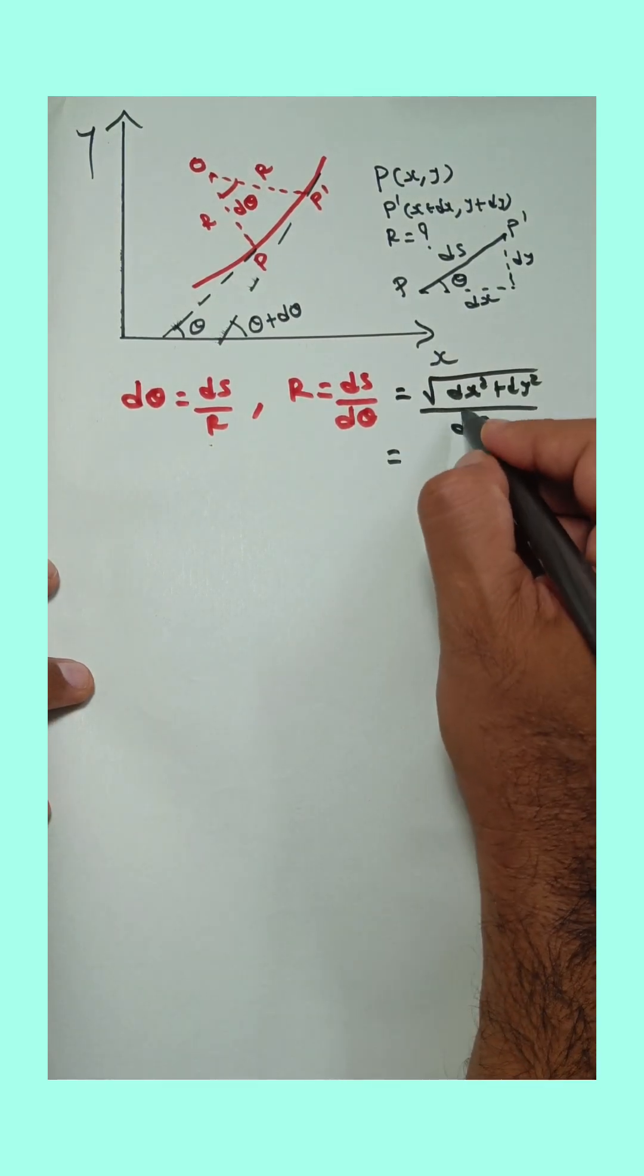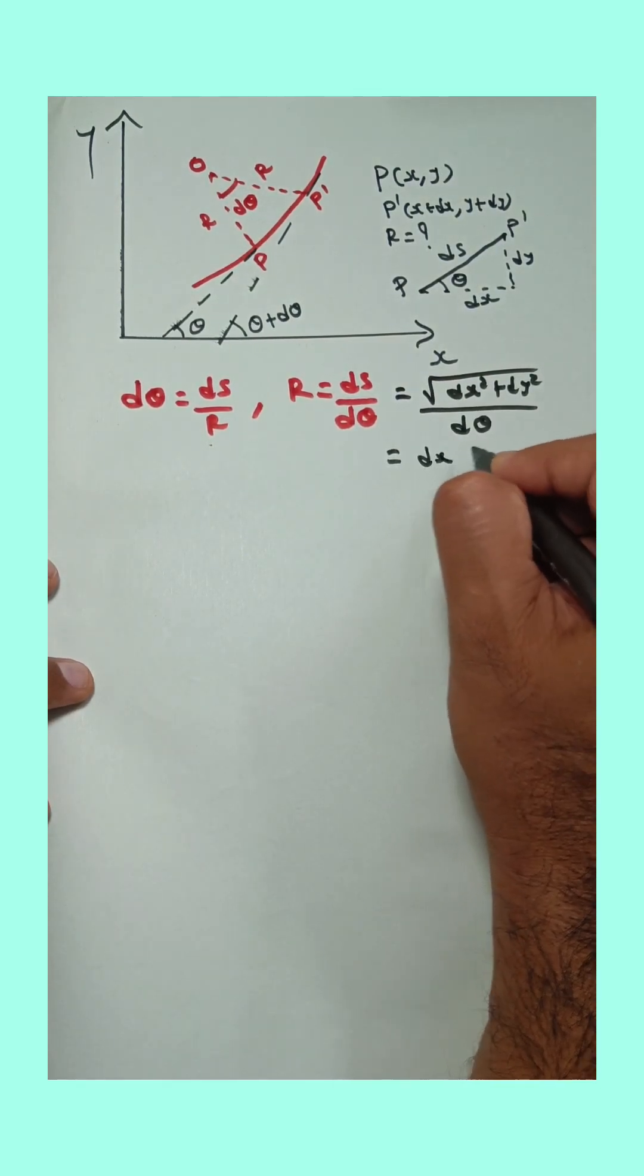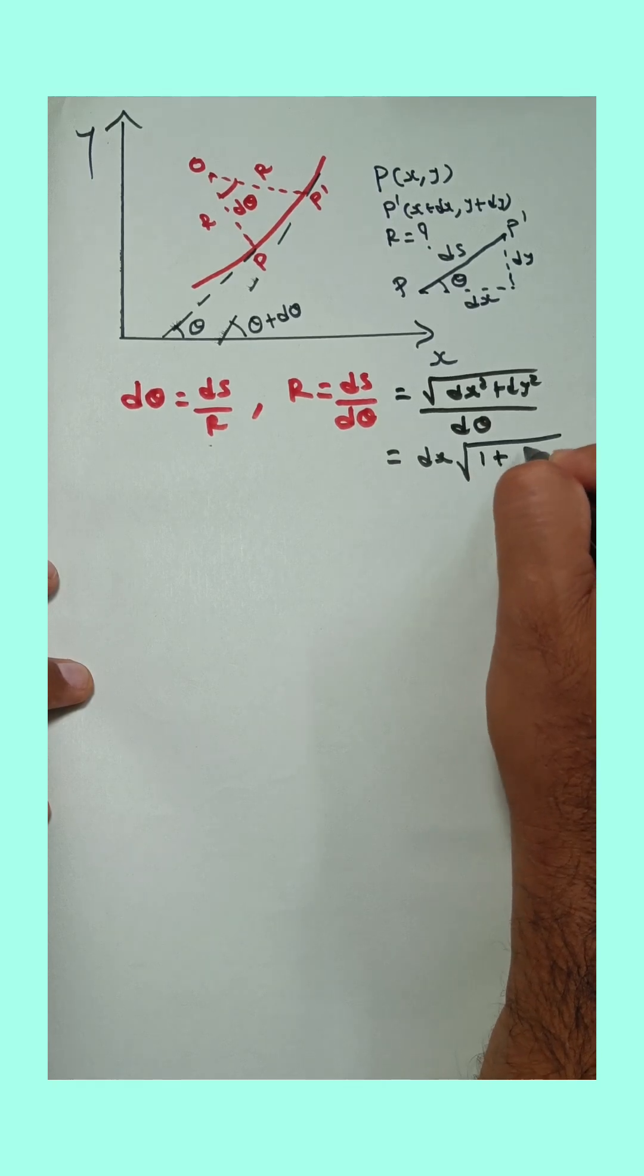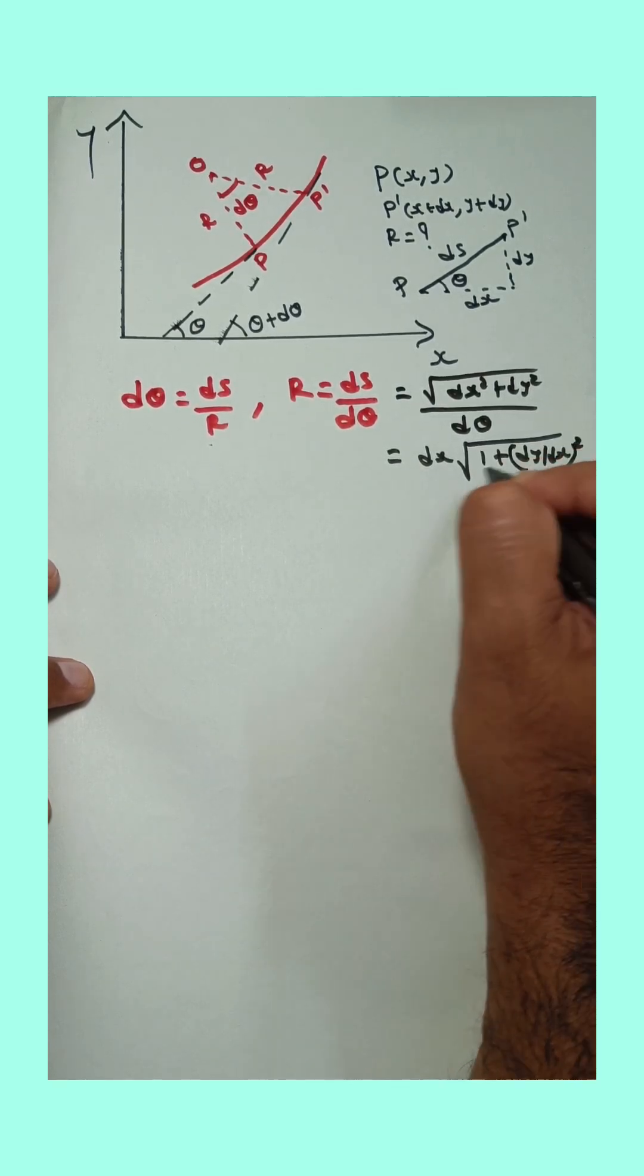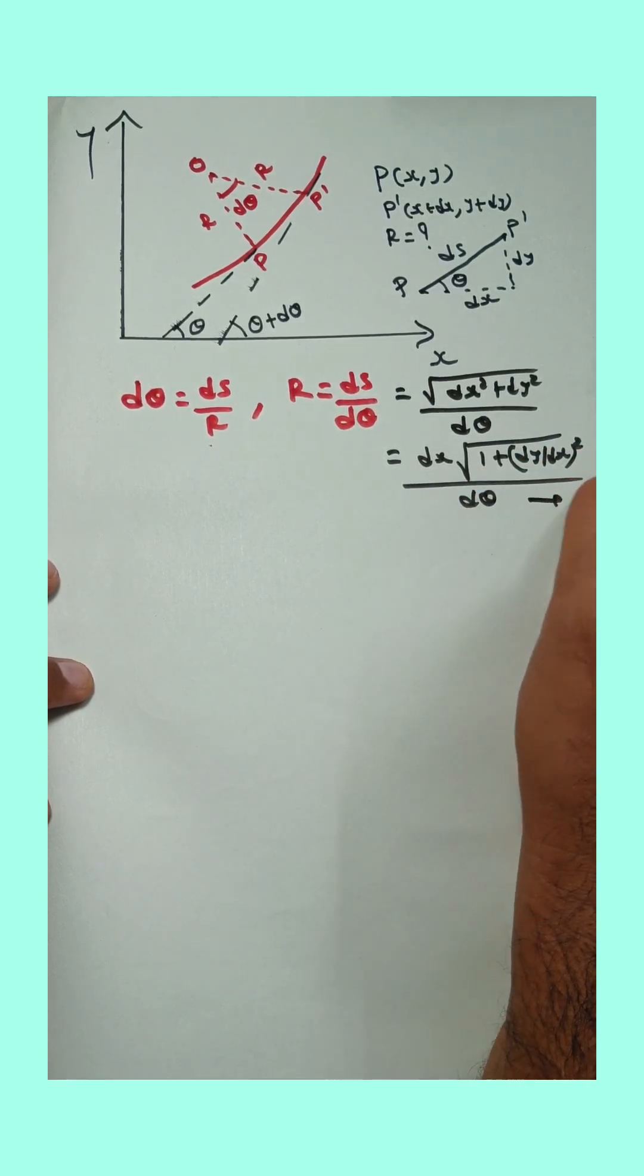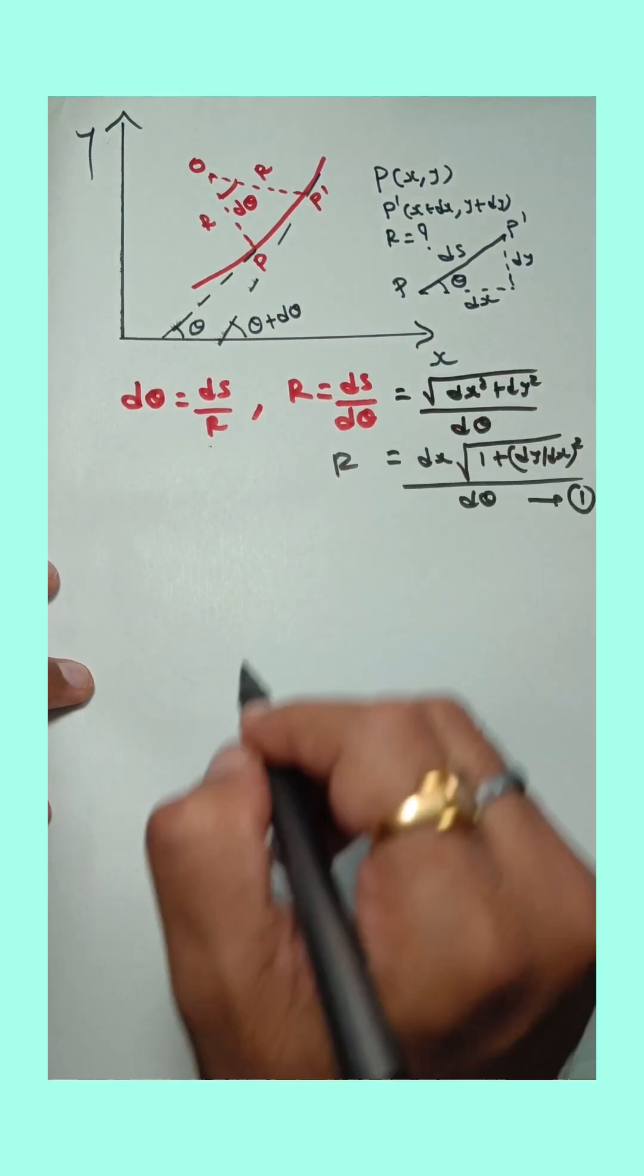Now here dx square is common, and square root of dx square is dx. So root dx times 1 plus dy upon dx whole square upon dθ. Equation number 1. That is the equation of R.